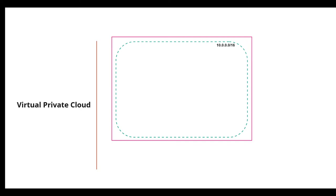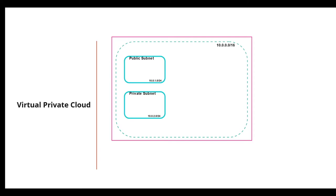First you select a region where you want to build your infrastructure. Next you select your virtual network area called VPC. Let's say you have a supernet assigned to your VPC as 10.0.0.0/16 — every instance in this VPC will have an IP range supported by that CIDR notation. You can further divide the VPC into private and public subnets and create your own instances or resources in these areas.